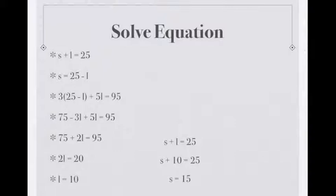Distribute 3 to 25 minus L which becomes 75 minus 3L plus 5L equals 95. Then add 5L to negative 3L which becomes 2L.